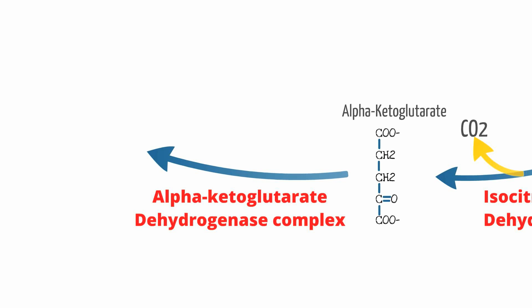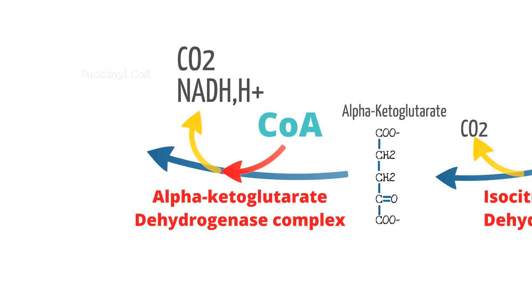Alpha-ketoglutarate is converted by the alpha-ketoglutarate dehydrogenase complex to succinyl-CoA. In this process, CoA is added and produces the second carbon dioxide molecule of the cycle, as well as an NADH. As part of the enzyme complex, cofactors such as thiamine pyrophosphate, lipoic acid, FAD, NAD, and coenzyme A are required for this step to take place.